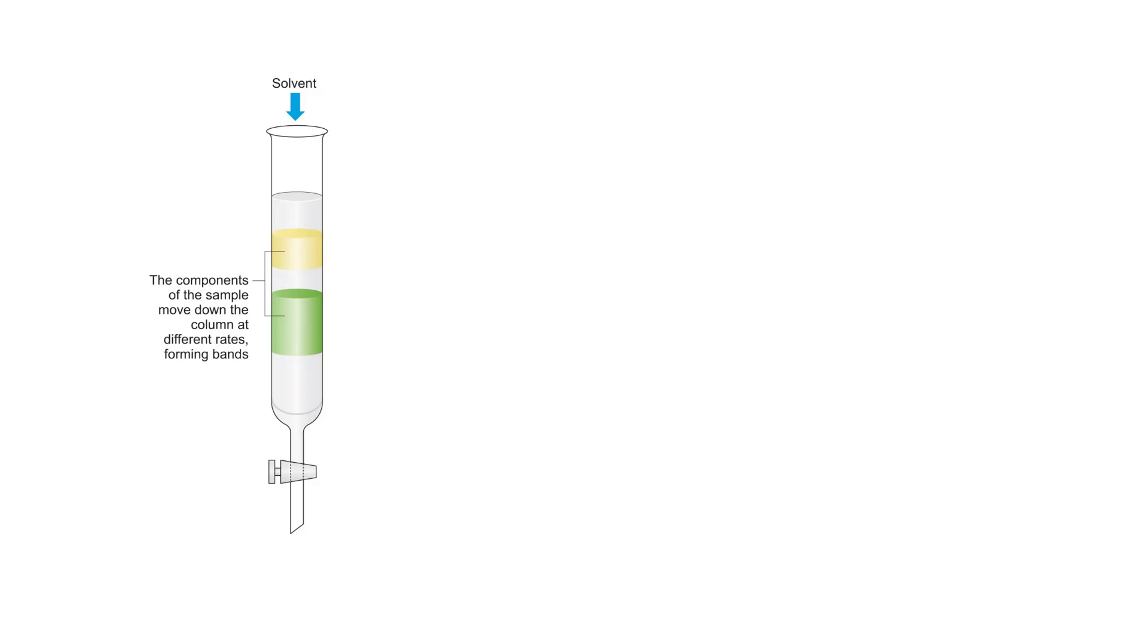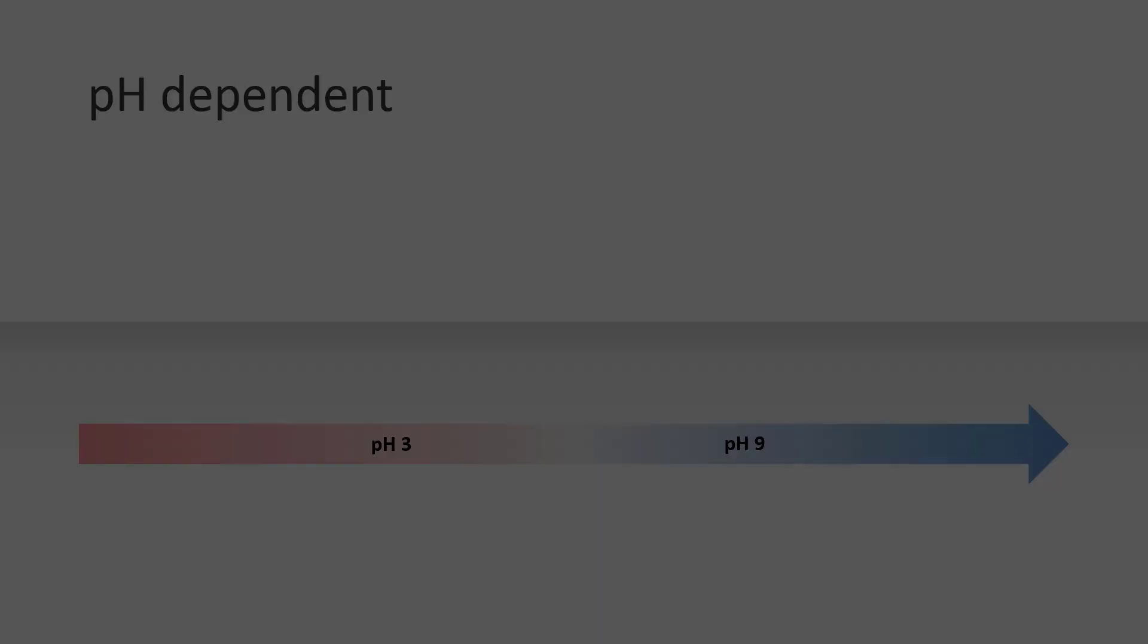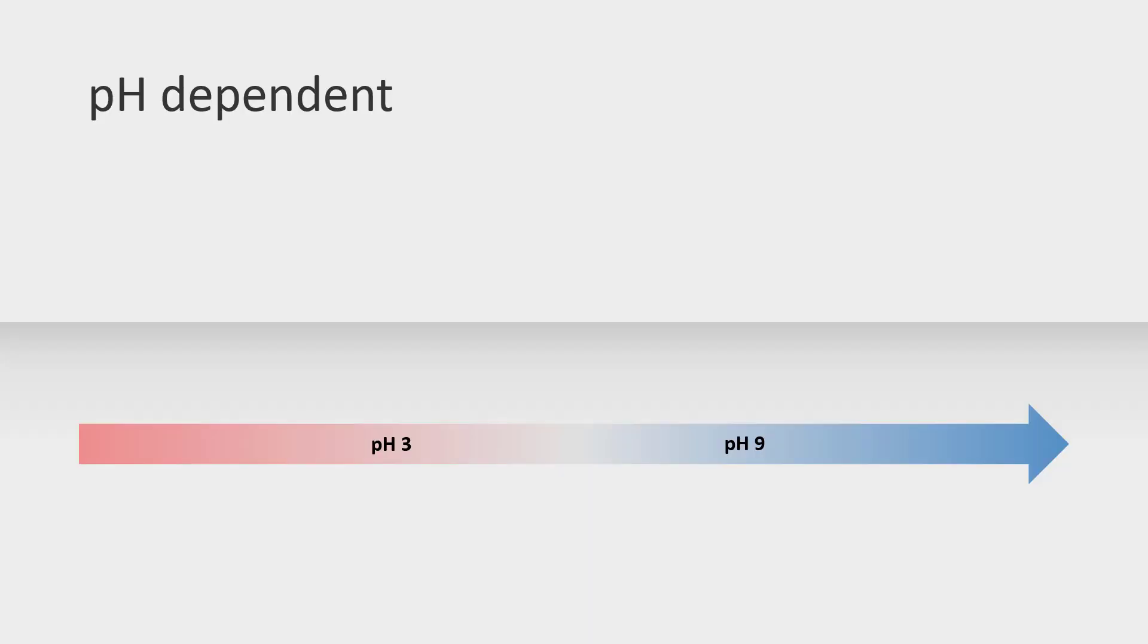Remember the chlorophyll experiment that we have done in CM 1191? We use column chromatography to separate beta-carotene and chlorophyll from a plant extract. The silica gel that we use for column chromatography is polar because of the silanol groups exposed on the silica surface. Similarly, on the surface of the fused silica capillary we use in CE, there are silanol groups.